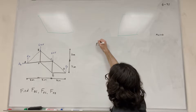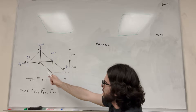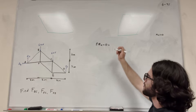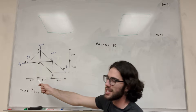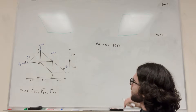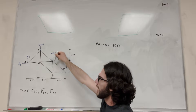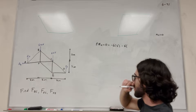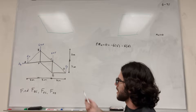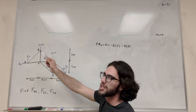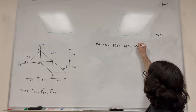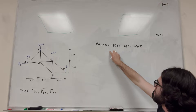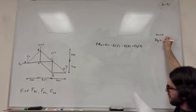Let's take the sum of the moments around A, equal to zero because we're at equilibrium. Each segment is three meters long. The six kilonewton force pushes down, making us rotate clockwise around A, so minus six times three meters. The next six kilonewton also pushes down clockwise, so minus six times six meters. D of Y pushes up — counterclockwise — so plus D of Y times nine meters. Solving this, D of Y is equal to six kilonewtons.